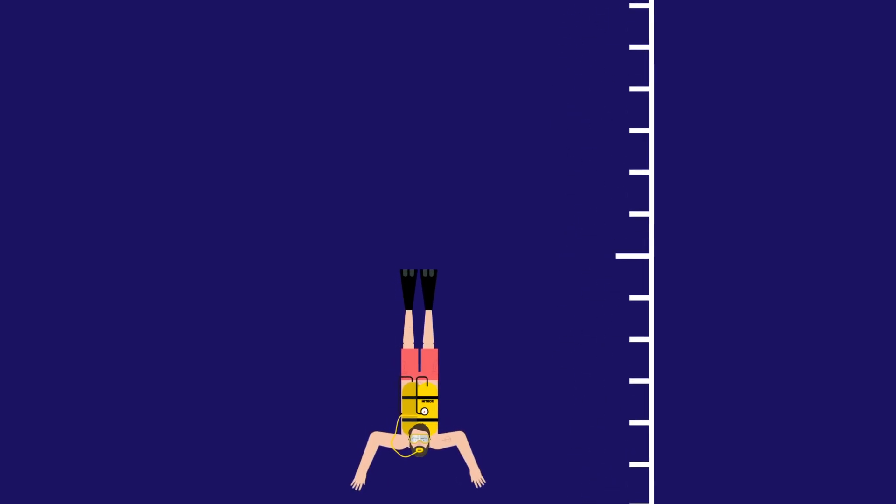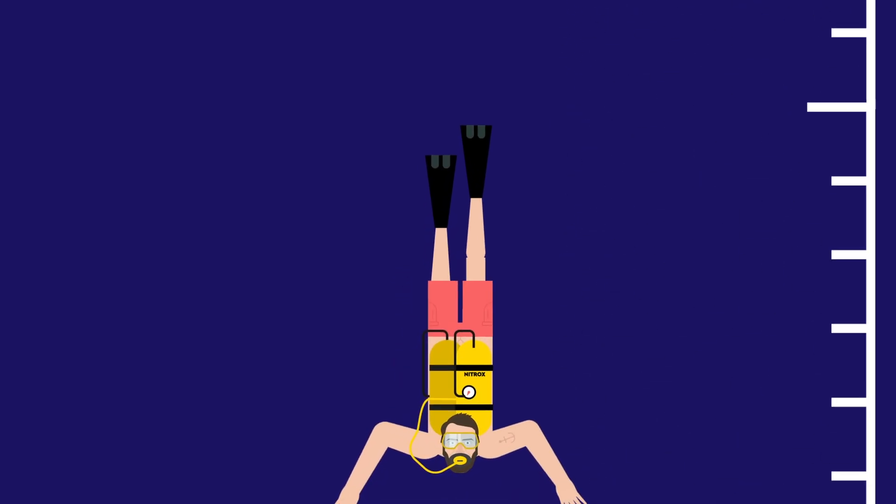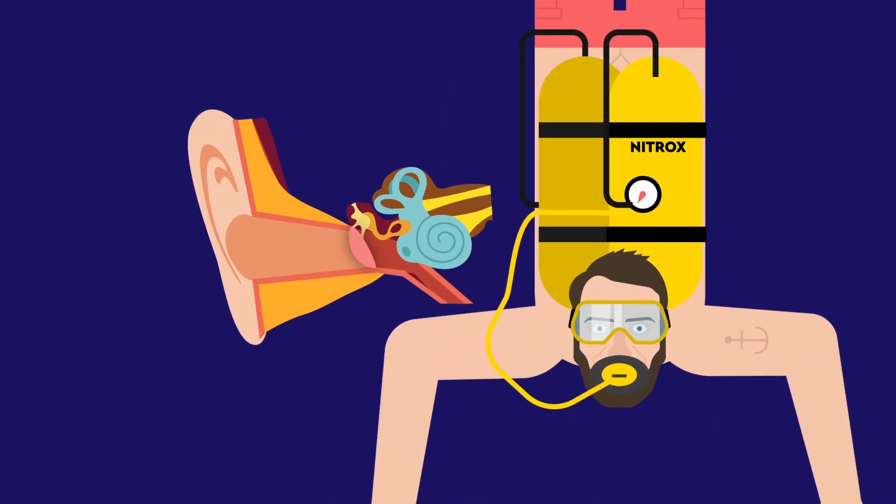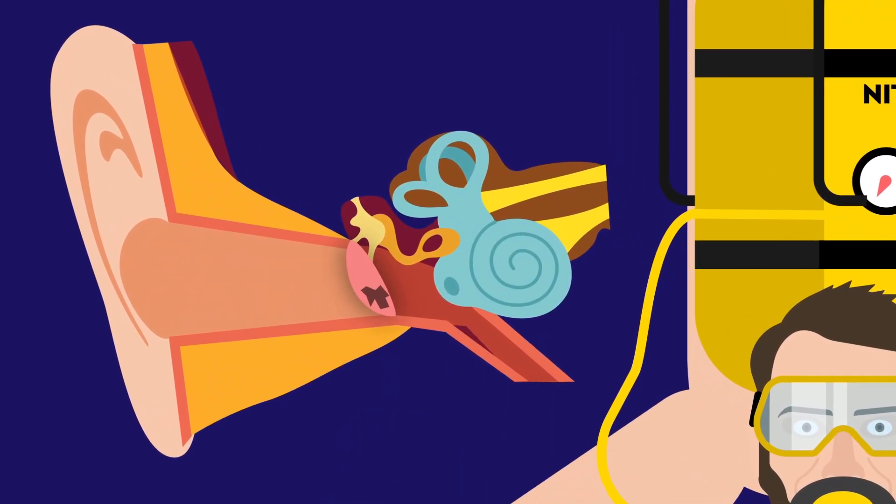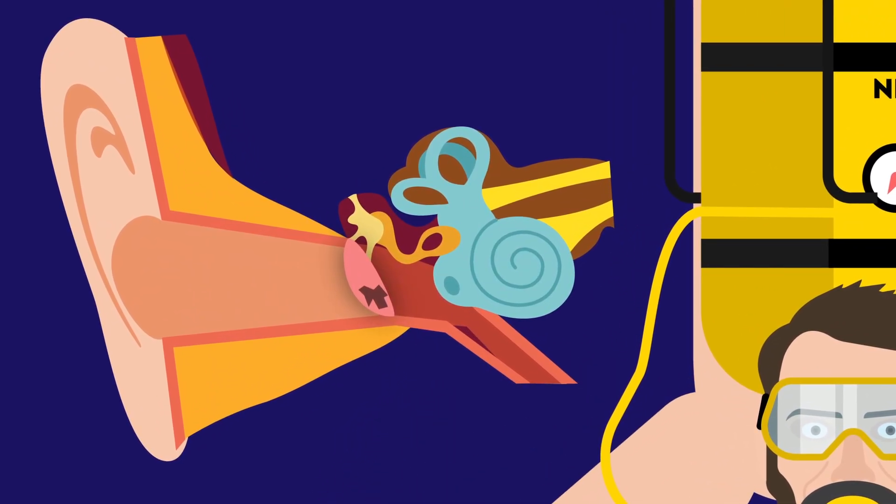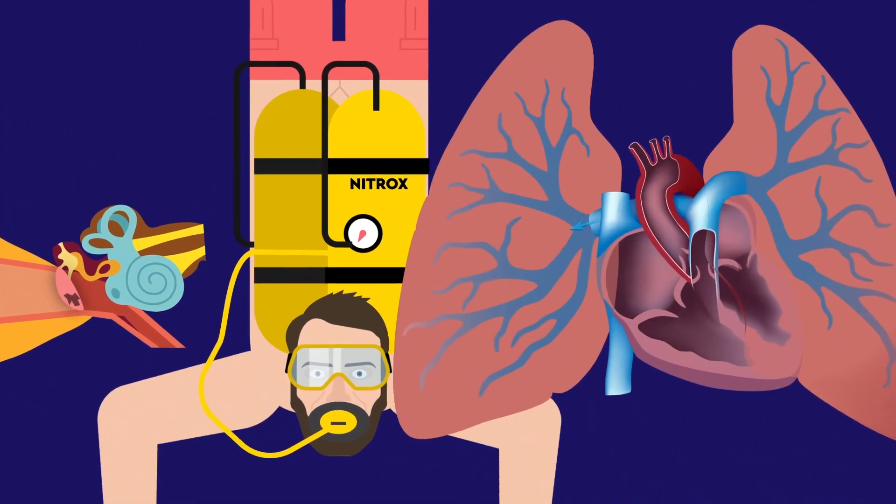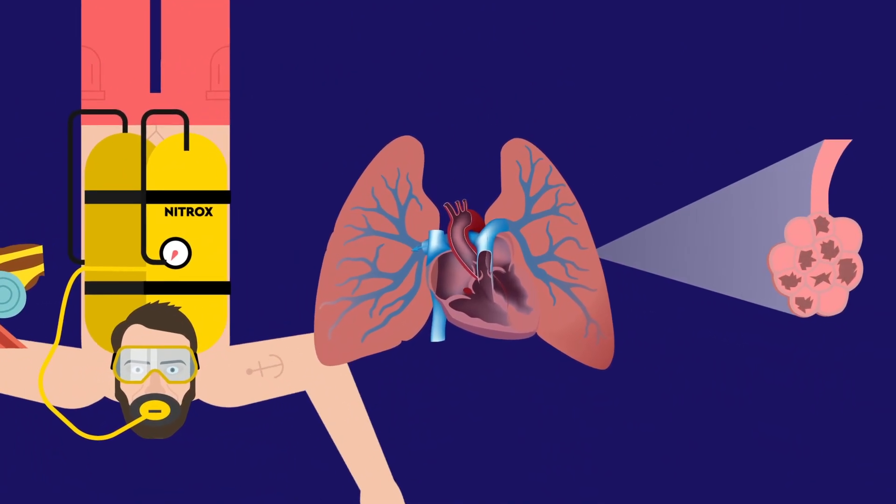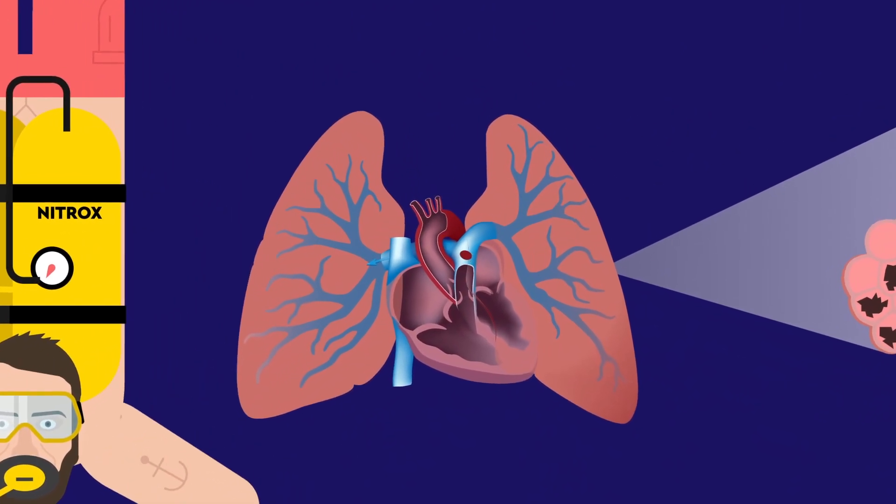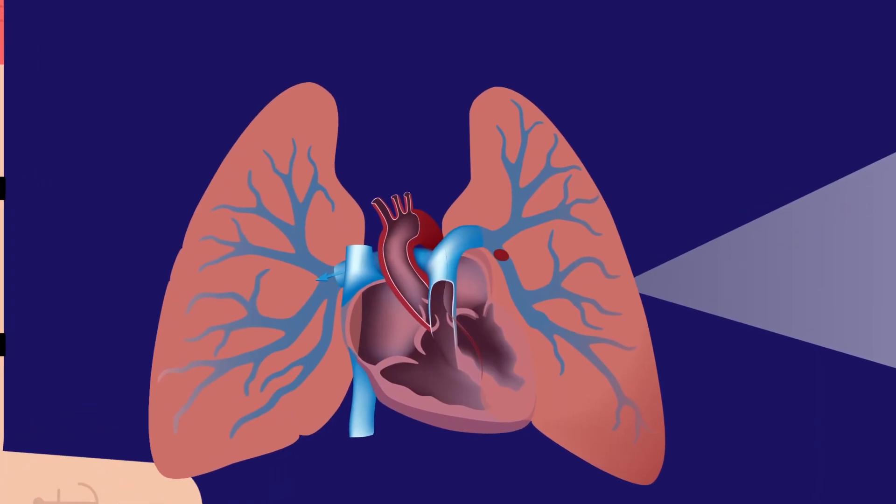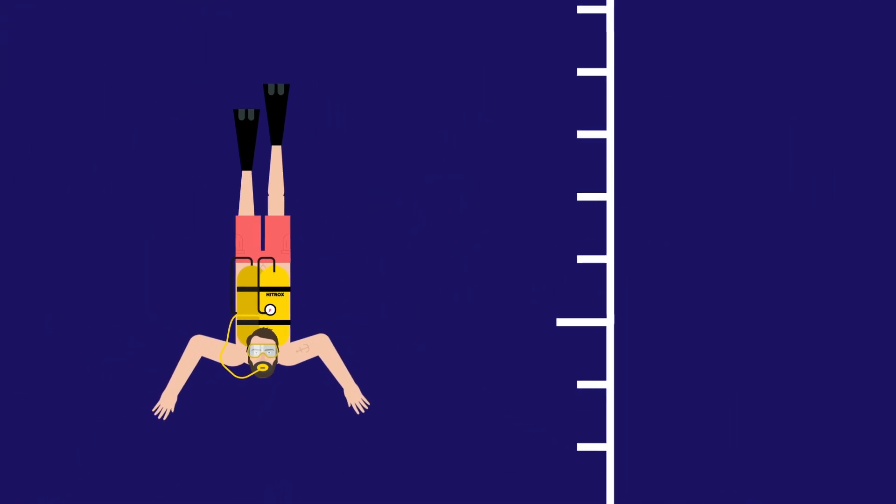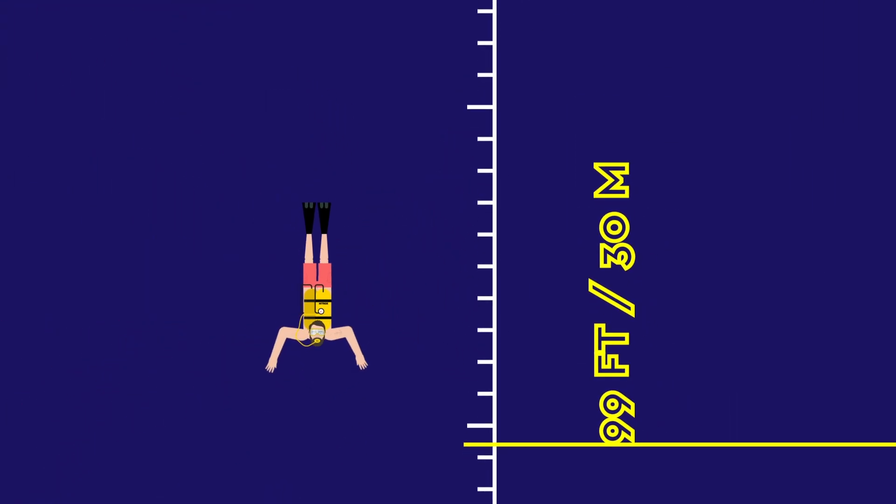You might suffer barotrauma, as the water pressure squeezes the air pockets inside you and ruptures your eardrums, or bursts the air sacs in your lungs. If air bubbles get into your blood, you might suffer an embolism, causing a heart attack or stroke. Bad enough on land, even worse when you're 100 feet underwater.